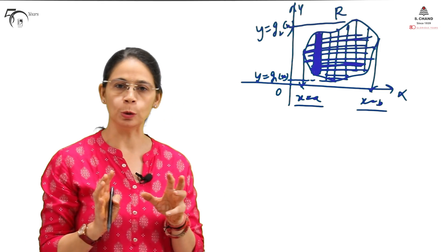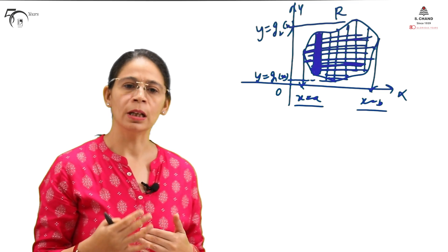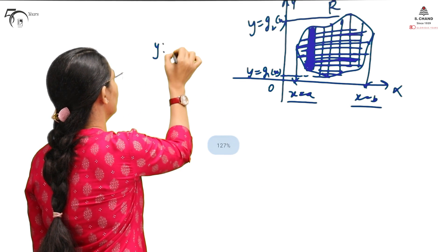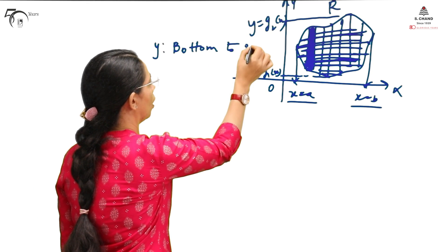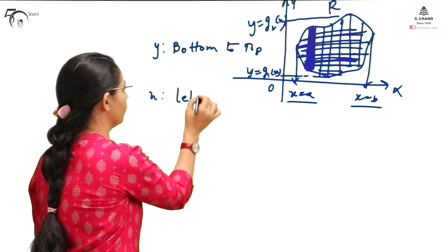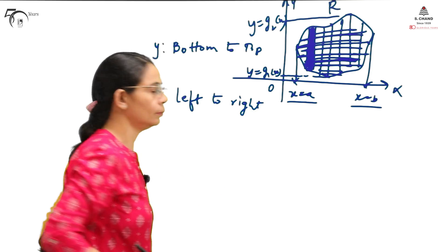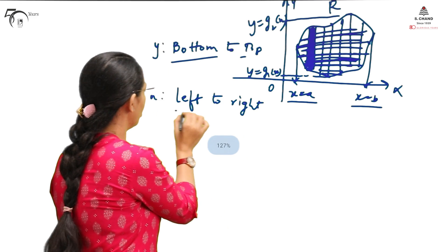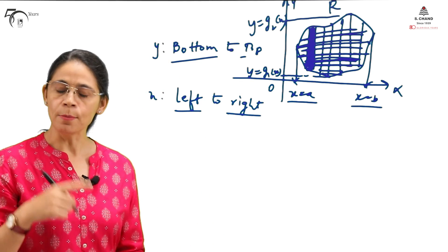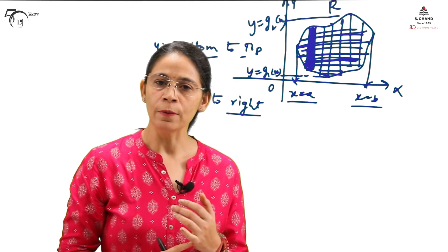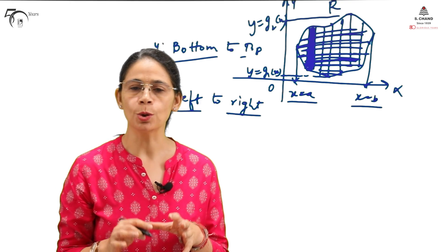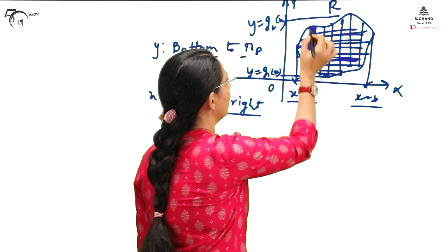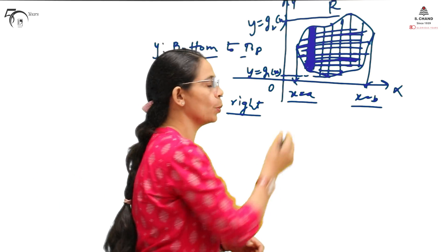There are a few rules we must follow. When finding the limits for y, we go from bottom to top. For x, we go from left to right, to find the lower and upper limits. The lower end of the strip gives the lower limit for y, and the upper end gives the upper limit for y. Similarly, leftmost gives the lower limit for x and rightmost gives the upper limit for x.